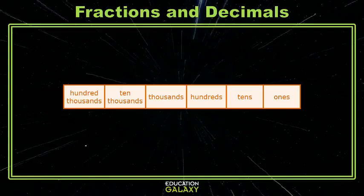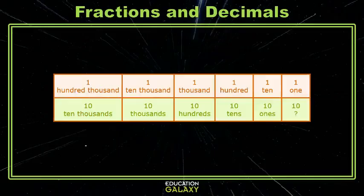Remember this place value chart? It's a chart that tells you the value of a digit based on its place. And do you remember, for each of those places, that their value is ten times more than the value to the right? So that 100,000 has ten ten-thousand, and so on down the line.